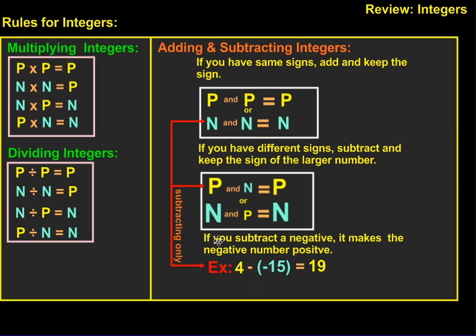Now when you're subtracting, if you subtract a negative, it makes the negative number a positive. So let's take a look at an example of that. We have 4 minus minus 15. You can see we have the two negatives. Those two negatives actually work together to create a positive, and that 15, which started out negative, is also now positive. So this would become 4 plus 15, which is 19.